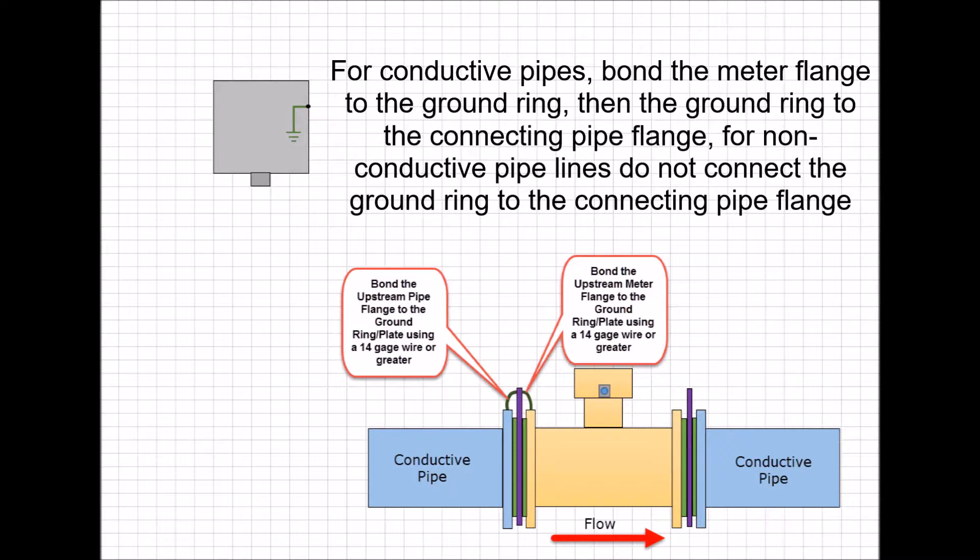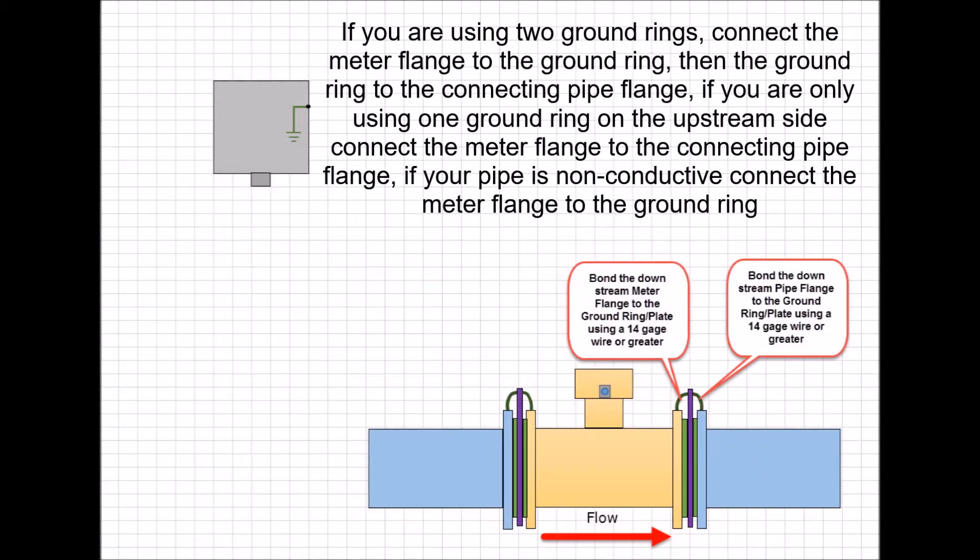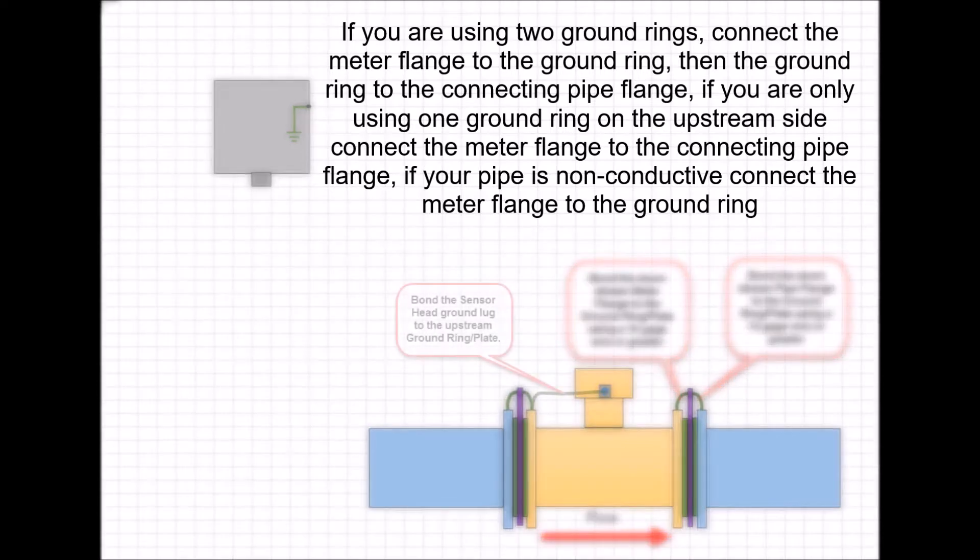For conductive pipes, bond the meter flange to the ground ring, then the ground ring to the connecting pipe flange. For non-conductive pipelines, do not connect the ground ring to the connecting pipe flange. If you are using two ground rings, connect the meter flange to the connecting pipe flange. If you are only using one ground ring on the upstream side, connect the meter flange to the connecting pipe flange. If your pipe is non-conductive, connect the meter flange to the ground ring.